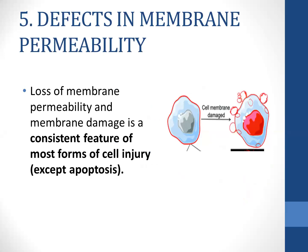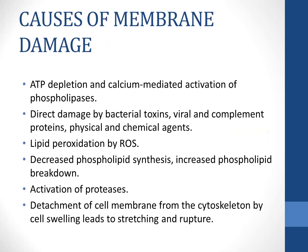Defects in membrane permeability are another mechanism of cell injury — loss of membrane permeability results in leakage of cellular organelles and cell contents, causing cell injury. Causes of membrane damage include ATP depletion, calcium-mediated activation of phospholipases, direct damage by bacterial toxins, viruses, physical and chemical agents, and free radical damage. Increased phospholipid breakdown, activation of proteases, and detachment of the cell membrane from the cytoskeleton also lead to membrane damage.